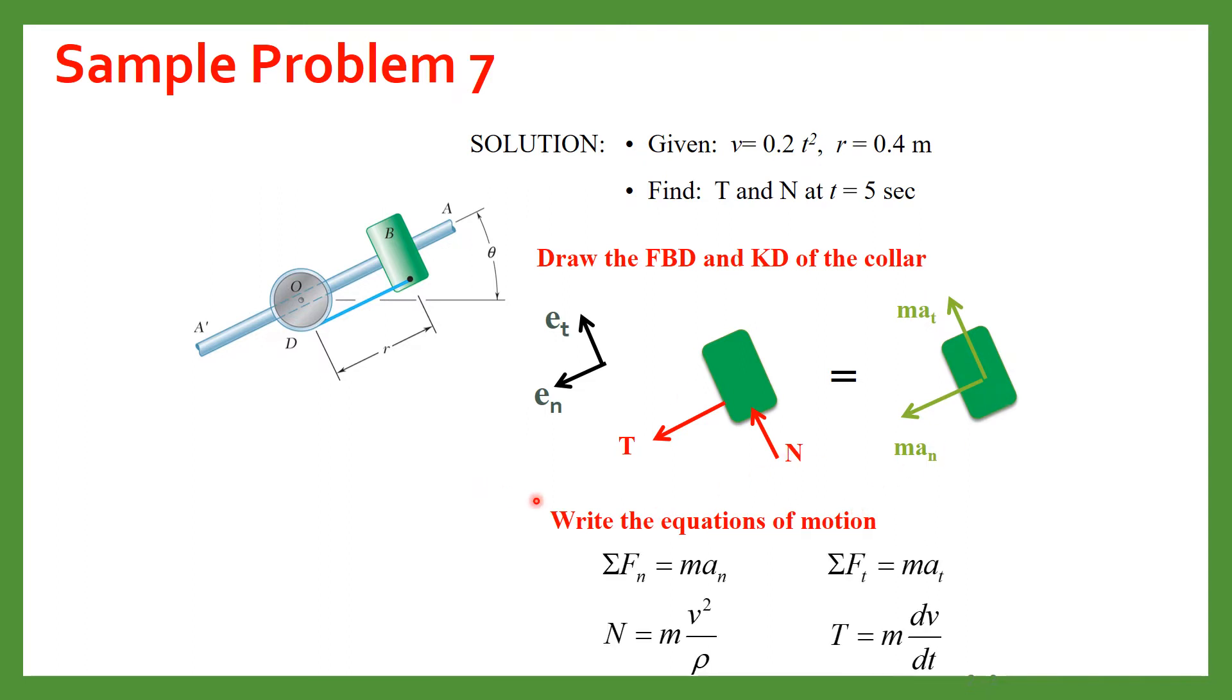So we will write the equations of motion in normal and tangential directions. So summation of FN will be equal to MAN and summation of FT will be equal to MAT. So in the normal direction we have this force N and in the radial direction we have this T. So N is equal to M V square upon R and T is equal to M dV by dt.